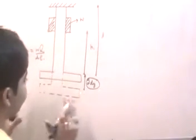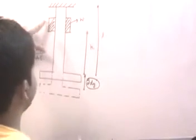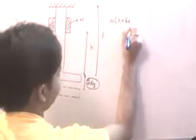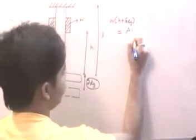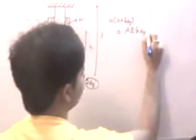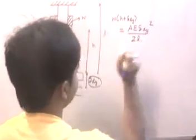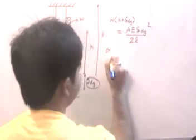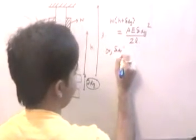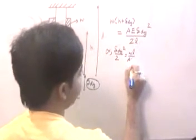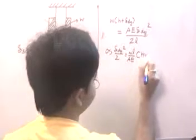At this point, equilibrium will be maintained. So the whole potential energy of this body — that is, W into (H plus delta_dy) — is equal to the strain energy stored in the body, which we have seen is equal to AE times delta_dy squared, divided by 2L. Here I am writing delta_dy because this is the deflection due to dynamic loading. So I need to solve this quadratic equation.